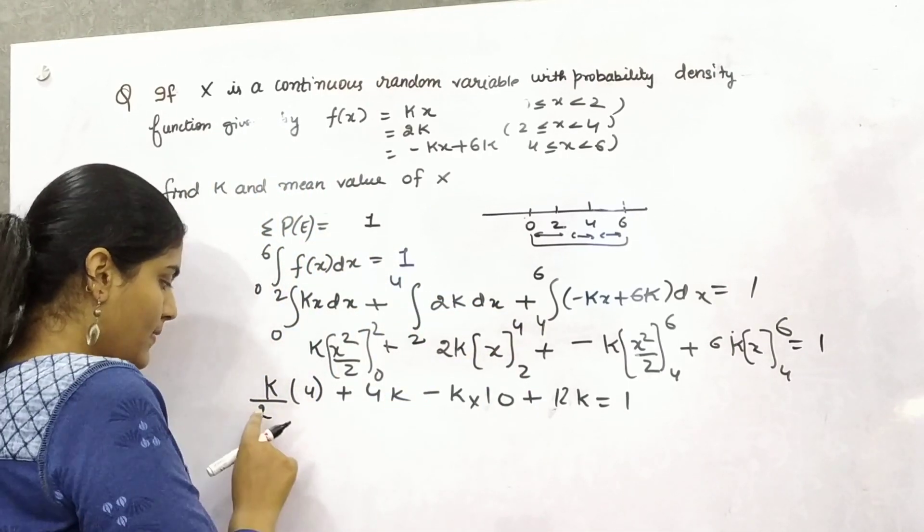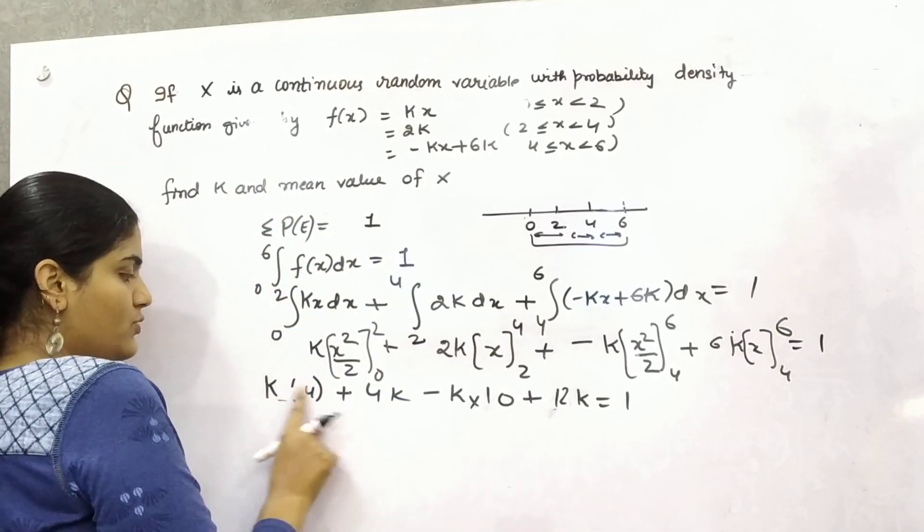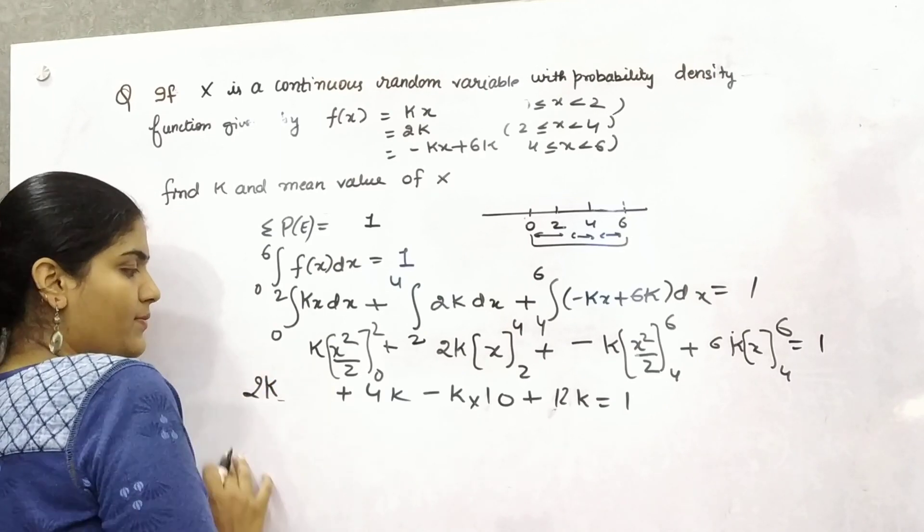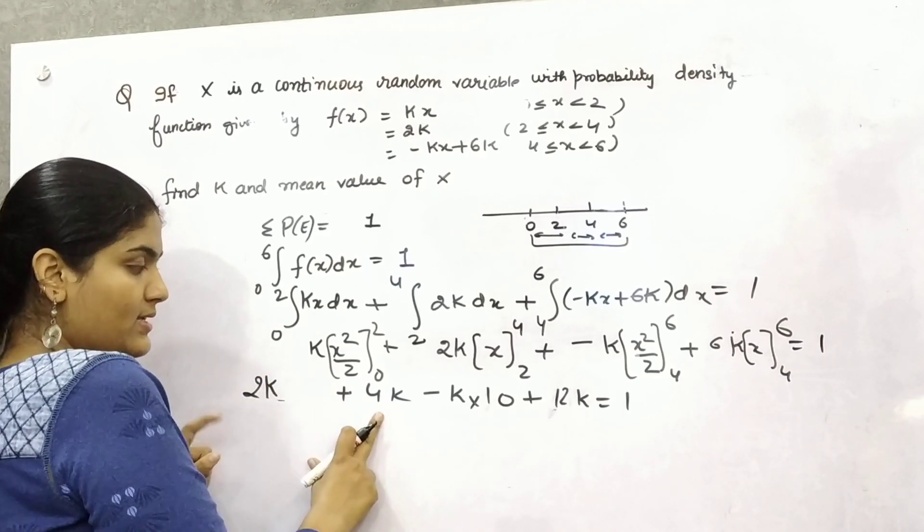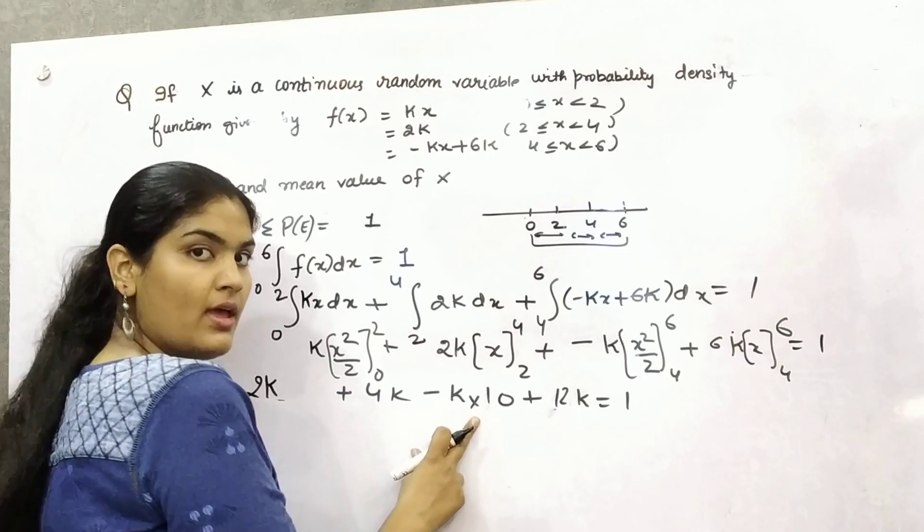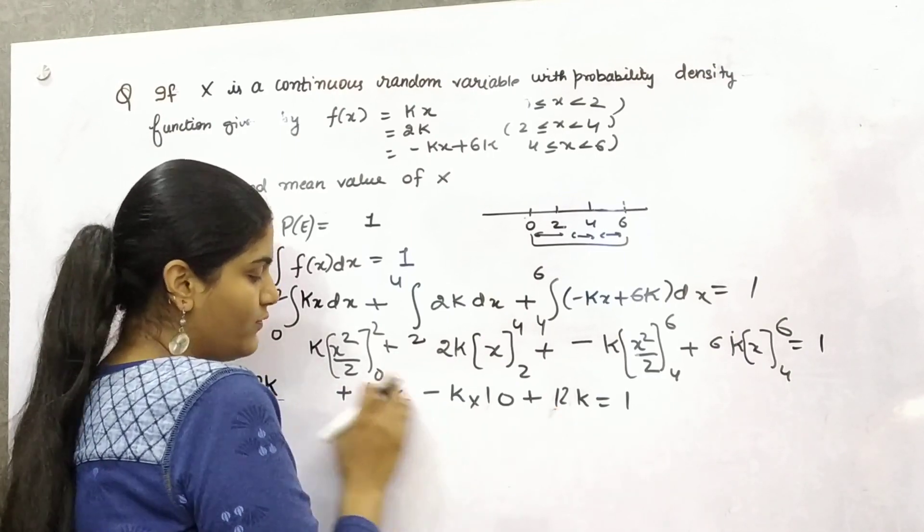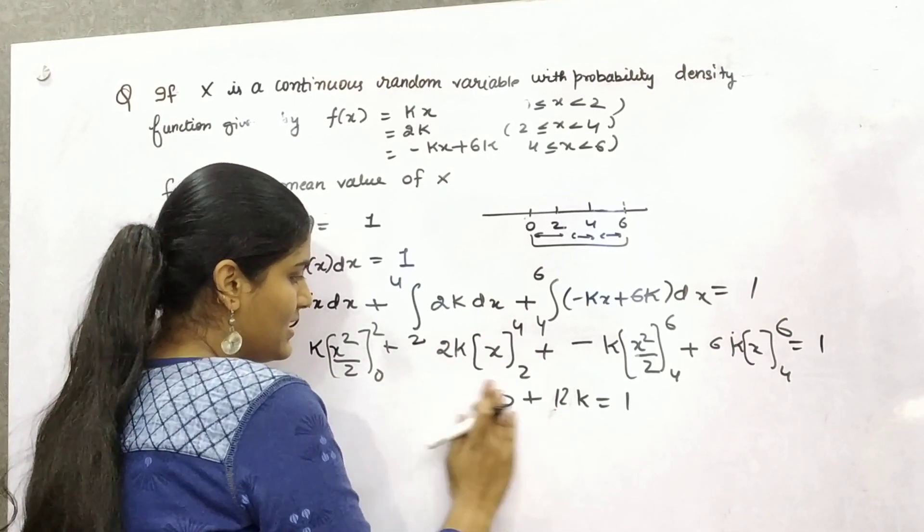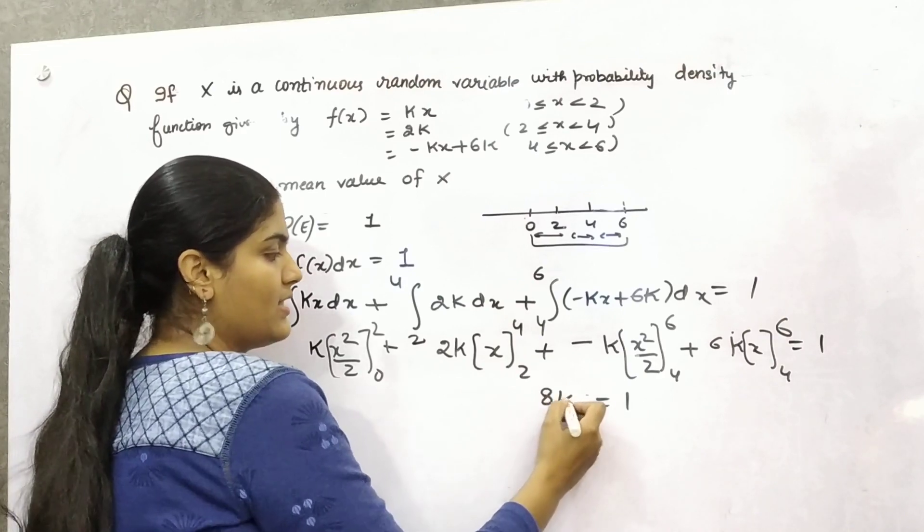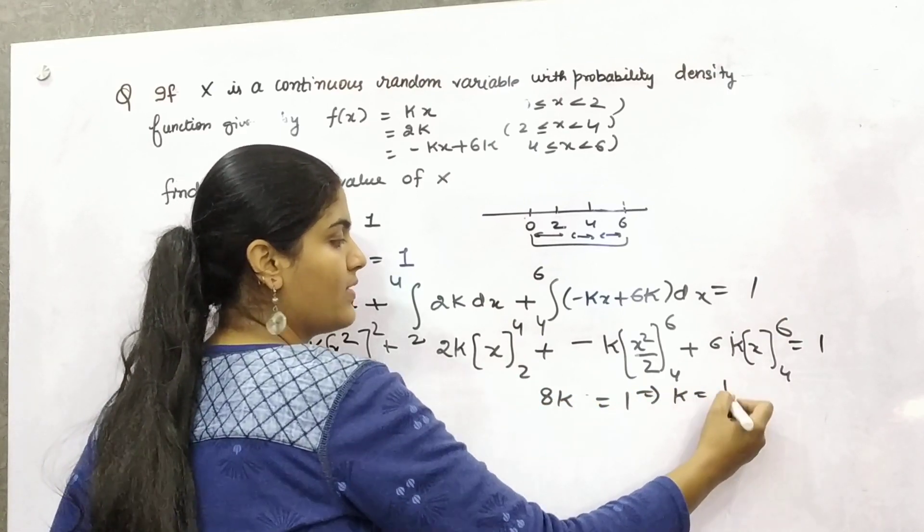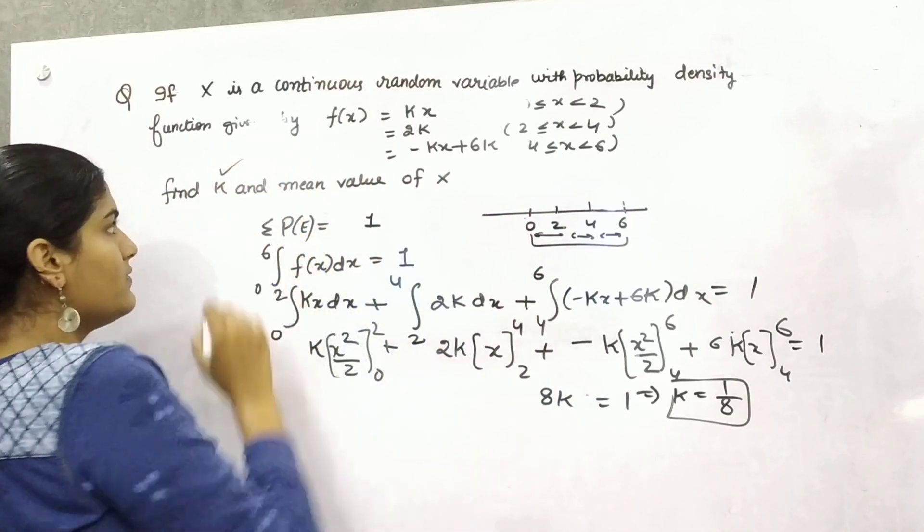Now solve this. You can write it as 2k, so 2 and 4, 6k minus 10k minus 4k. 12 minus 4 is 8. So you can write it as 8k. That means your k is 1 by 8. So first part is solved.